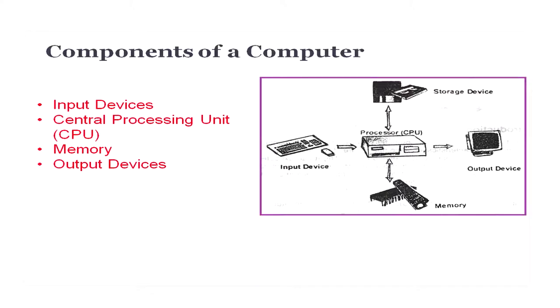The basic components of a computer are: input devices to accept input; the central processing unit which converts input into output; memory that stores the data being processed; and output devices which help us get the final result. Let us discuss these components one by one in detail.